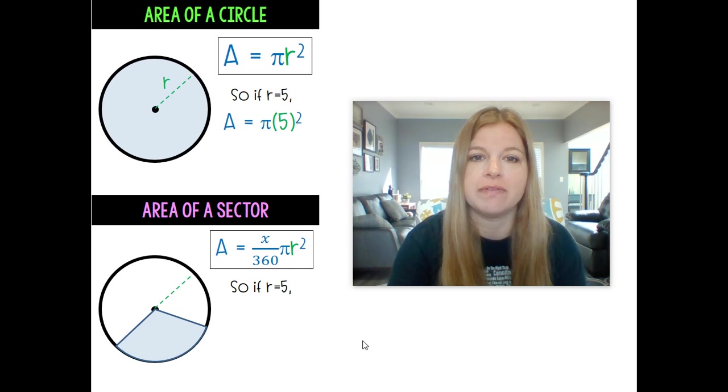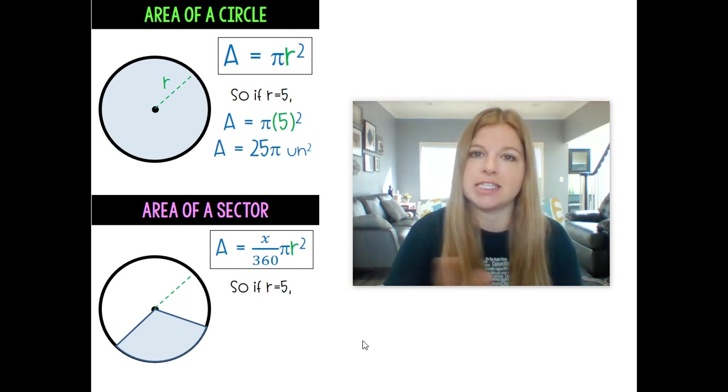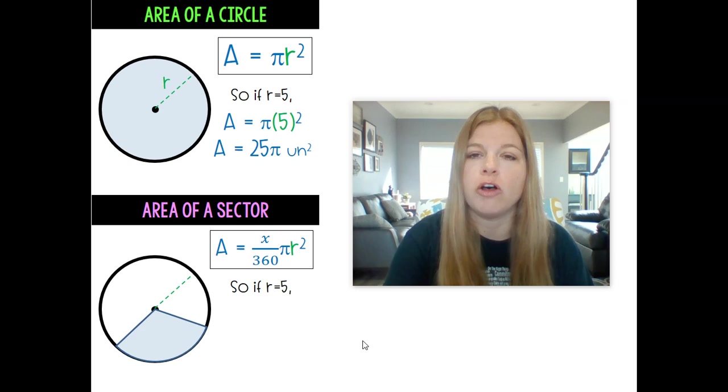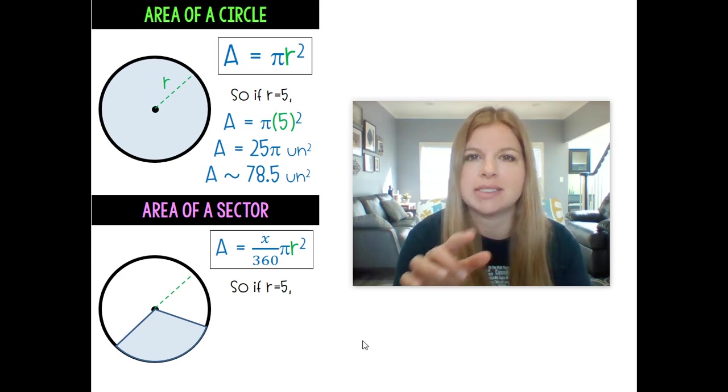5 squared is 25. I can leave this as my actual final answer, just simply 25 pi units squared. Or if you're asked to round to the nearest tenths place, go ahead, do 25 times pi in your calculator, round to the tenths place. All of my problems, I'm going to show you both methods: leaving in pi and rounding to the nearest decimal. And you would get 78.5 units squared. And I put the little squiggly line to say it's approximately that amount. That's how easy it is to find the area of a circle.